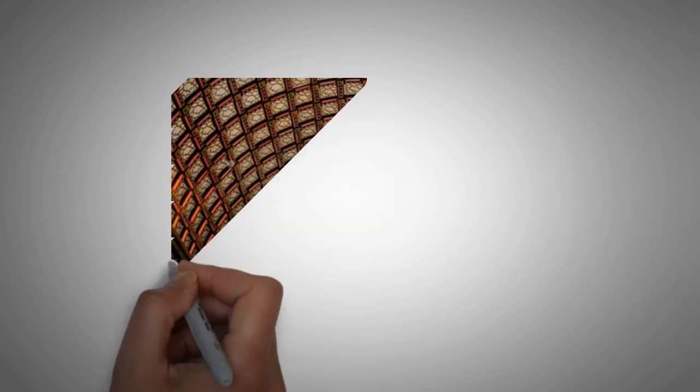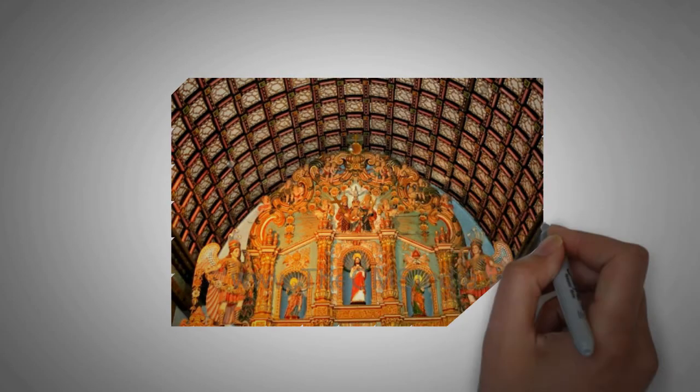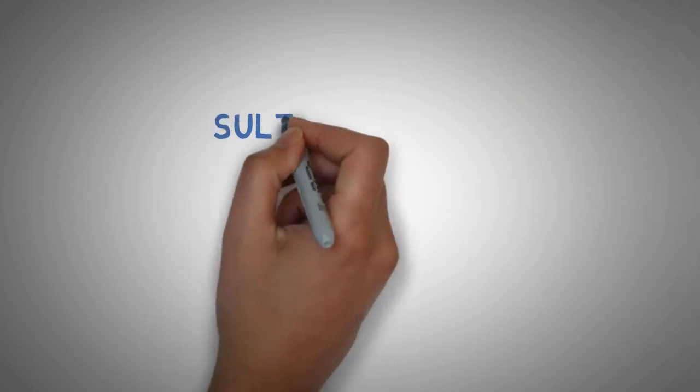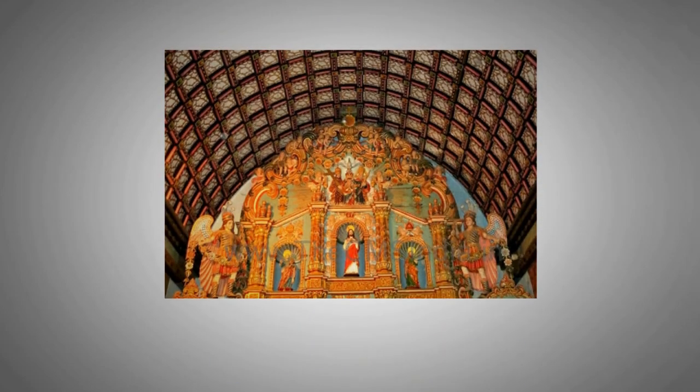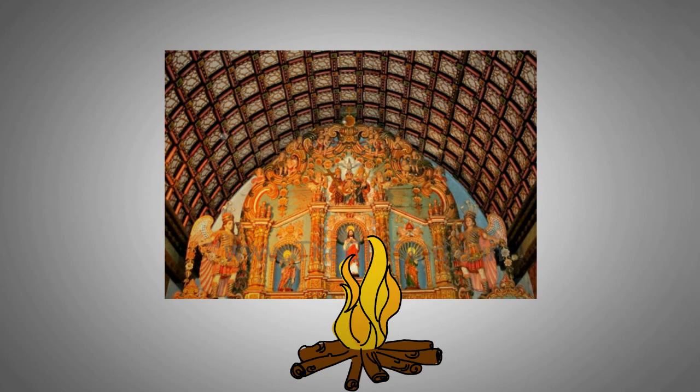The church still has the original altar used by St. Thomas. But due to the invasion in Kerala during the 18th century, the church was destroyed by fire and had to be rebuilt. The traditions of St. Thomas are still preserved till today.